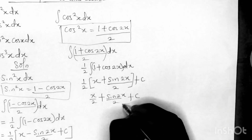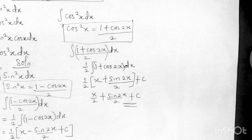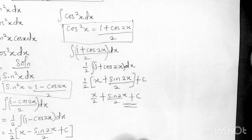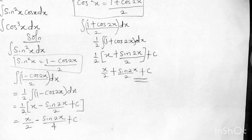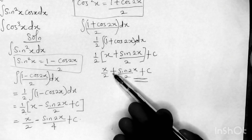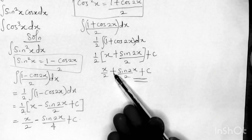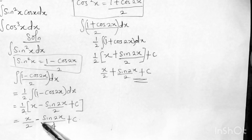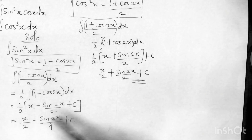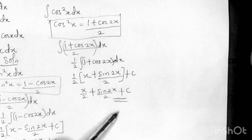That is the final answer. Notice the difference between the two results: for sin²x the answer has a minus sign, and for cos²x the answer has a plus sign.